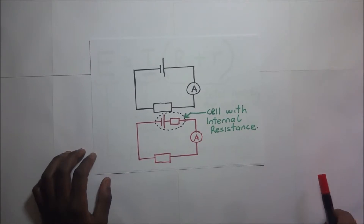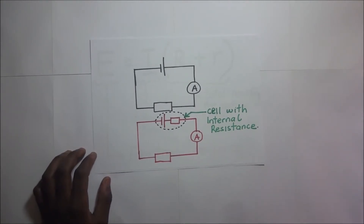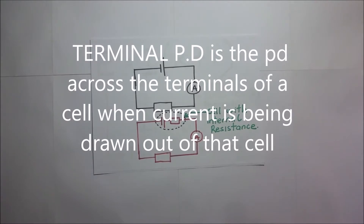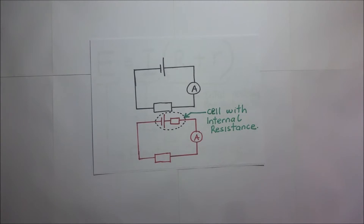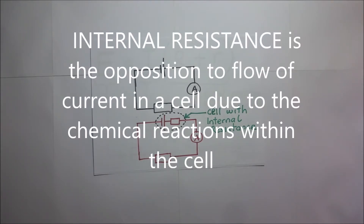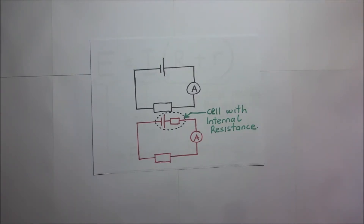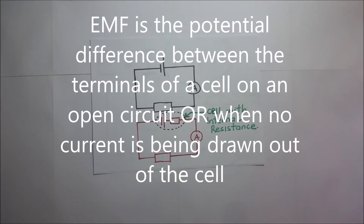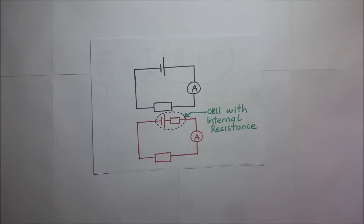To recap: terminal potential difference is the potential difference across the terminals of a cell when current is being drawn out, or the PD across the terminals in a closed circuit. Internal resistance is the opposition to flow of current inside the cell due to chemical reactions inside it. EMF or electromotive force is the potential difference across the terminals of the cell on an open circuit, or the PD when no current is being drawn out.